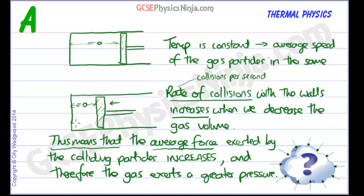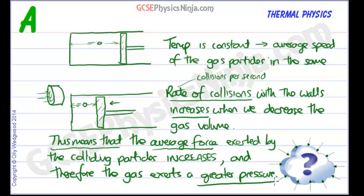Remember that a force acting on an area creates a pressure — here is the piston in 3D, with a force acting on its area, creating a pressure. So there we have it: if we decrease the volume of the gas, then the gas exerts a greater pressure — there is a bigger gas pressure inside. And that is the key thing to take away from this: volume decreases, so we decrease the gas volume, then the pressure of the gas increases.